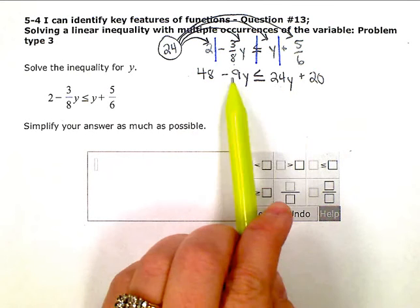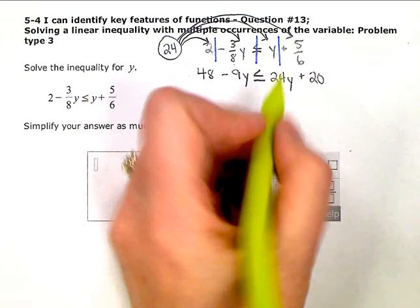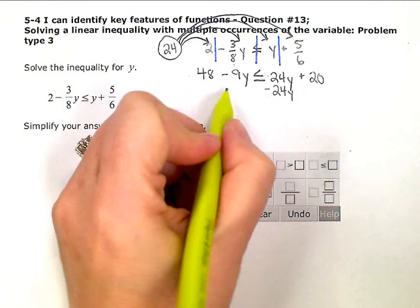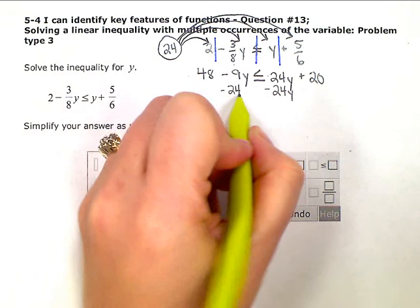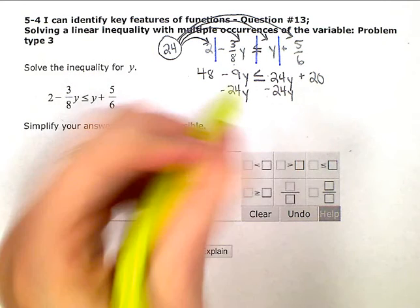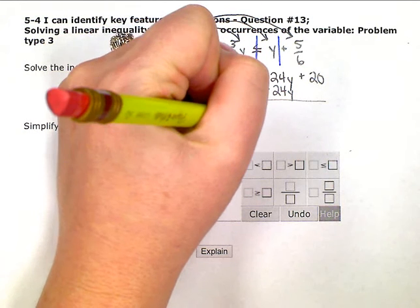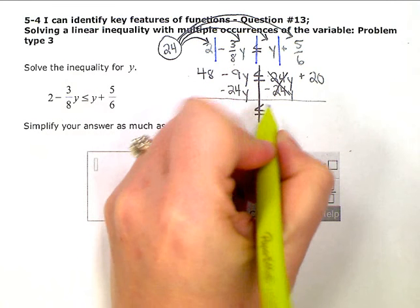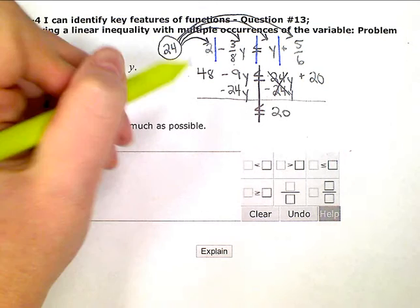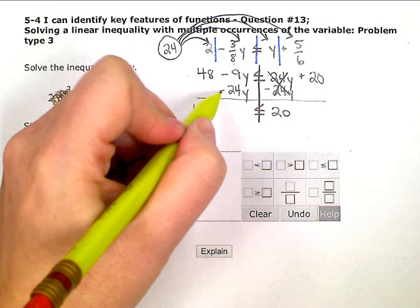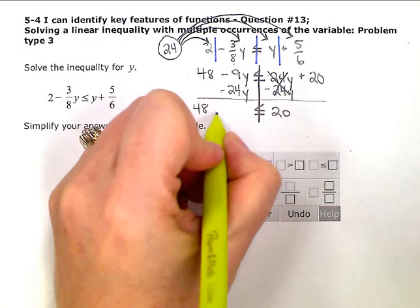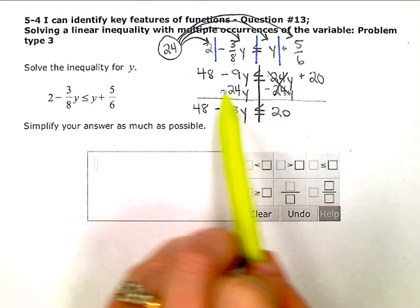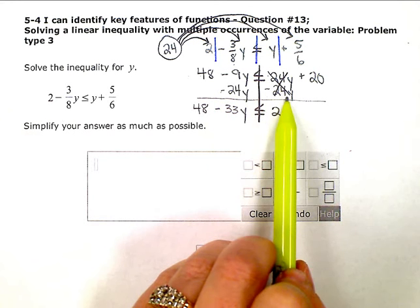But you could choose. It doesn't really matter which one you do first, but I'm going to zero out this one. So this is positive 24y, opposite is negative 24y. And to keep things balanced, I'm going to do the same thing on the other side. There's my inequality, dividing the right side from the left side. So this is now zero. All I'm left with is 20 over here. On this side, I have 48 and negative 9 minus another 24 is negative 33y. Now I didn't have to flip my sign because I was subtracting here, not multiplying or dividing by a negative. So I just left it.